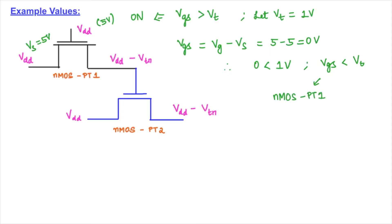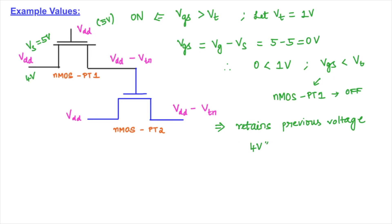When the transistor is in an off condition, it retains its previous voltage value. Before the 5 volt input arrived, the output would have been at 4 volts — the previous voltage is retained. That is why we call this 4 volt a weak one, denoted as VDD minus Vtn = 5 minus 1 = 4 volts.